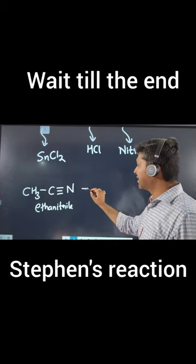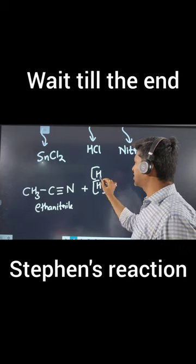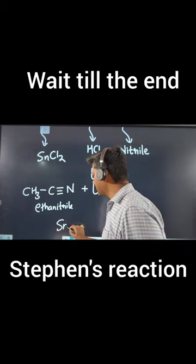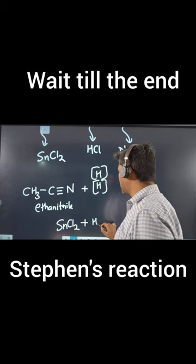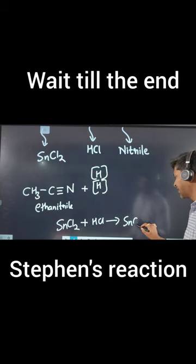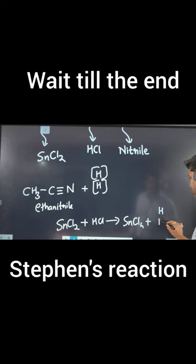With this, we are going to add nascent hydrogen. What is the source of these nascent hydrogens? Where are they coming from? These nascent hydrogens come from a reaction between SNCL2 and HCl. Whenever SNCL2 and HCl react, they give you SNCL4 plus nascent hydrogens.